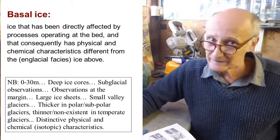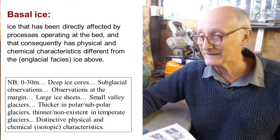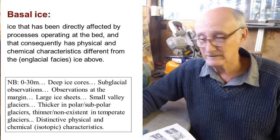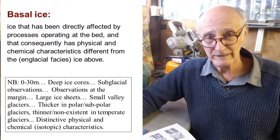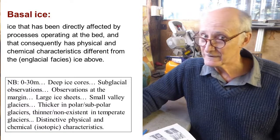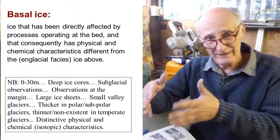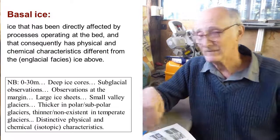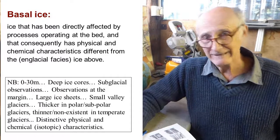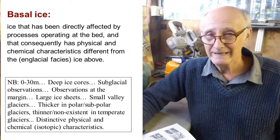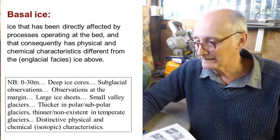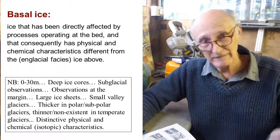The basal ice layer can be of all sorts of different thicknesses in different glaciers. Some glaciers have no basal ice at all. In other glaciers it goes typically to a maximum of maybe some meters or tens of meters. We've picked up basal ice at the bottoms of many major deep ice cores, through subglacial observations, or you can make observations at the margin. It occurs in large ice sheets and in small glaciers. It occurs in glaciers with a variety of different temperature regimes, but it tends to be thicker and better developed in cold polar or subpolar glaciers, and thinner or non-existent in temperate glaciers where there's lots of melting at the bed.